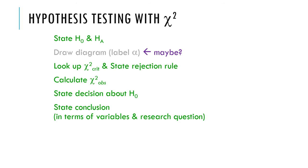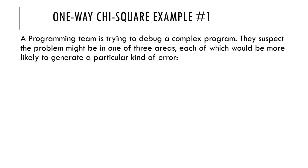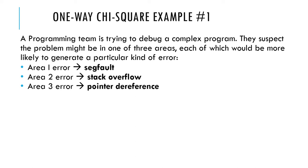Let's recall that hypothesis testing with the chi-square is just the same as hypothesis testing with everything else. We have pieces that plug into all the little parts: hypotheses, critical statistic, the observed sample point estimate, the null hypothesis, etc. So let's walk through this first example. A computer programming team is trying to debug something they've written that's very complex. They suspect the problem could be in one of three areas of the program, and they think if the problem was here, you'd be more likely to generate this kind of fault. The point is, I know how to do the statistics.